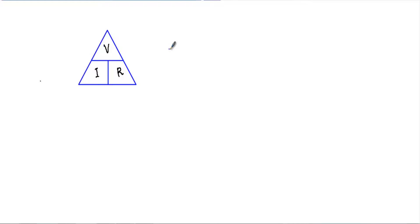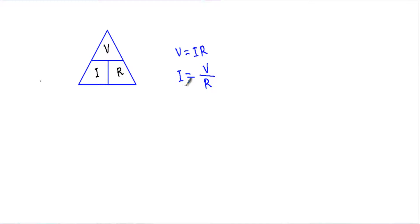There are three widely used methods of writing Ohm's law. First is V = IR. Second, if I want to calculate current, I = V/R. Third, if I want to calculate resistance, R = V/I. I can express these using a triangle known as the Ohmic triangle.